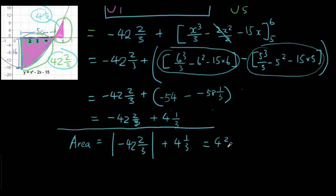So that's 42⅔ plus 4⅓, and the answer is 47 units squared.